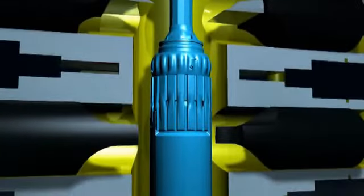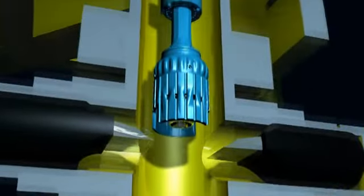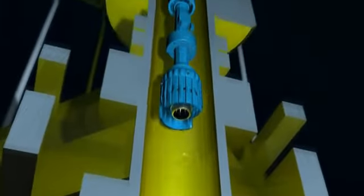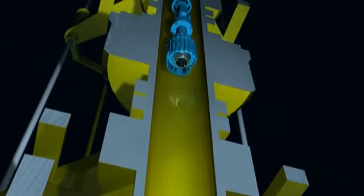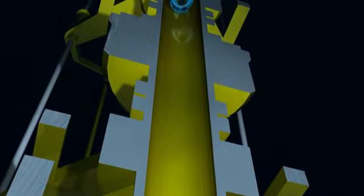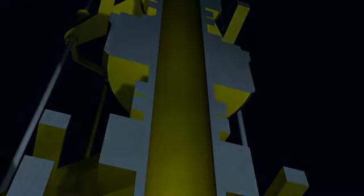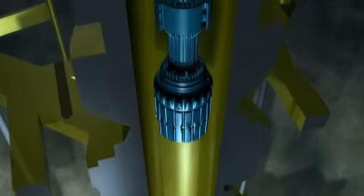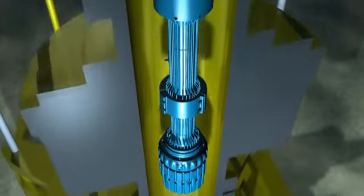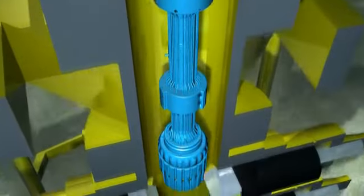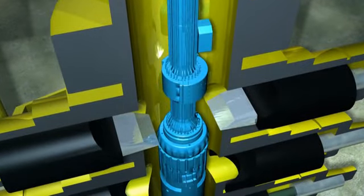The subsea test tree would then unlatch and be lifted clear of the subsea test tree valve section. This can be to allow the passing of bad weather or to disconnect from the well in an emergency situation. After the emergency conditions have been controlled, the subsea test tree latch section can be reconnected to the valve section and the retainer valve reopened.